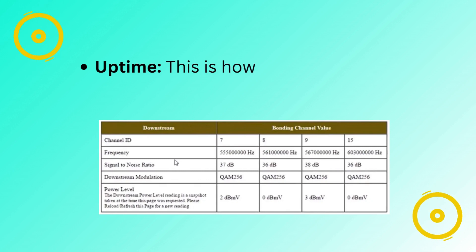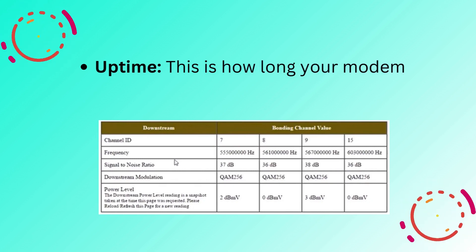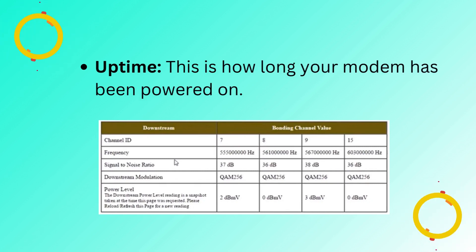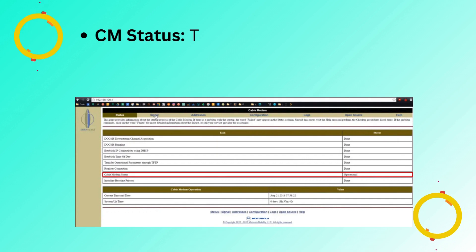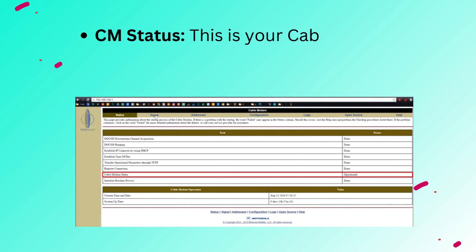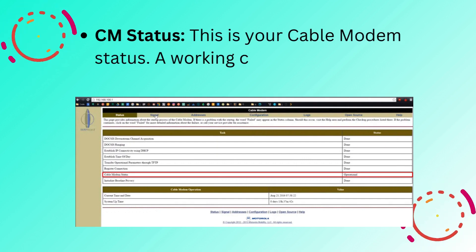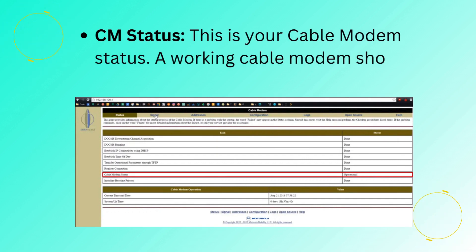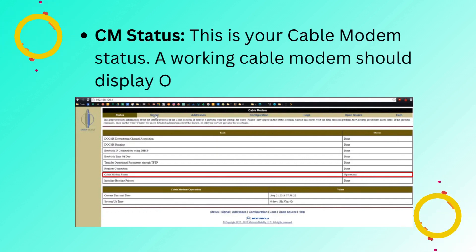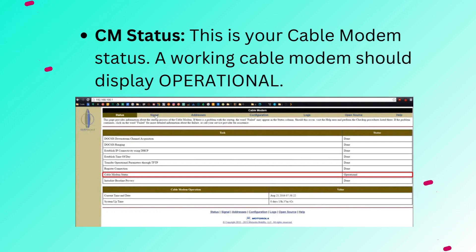Uptime: this is how long your modem has been powered on. CM status: this is your cable modem status. A working cable modem should display operational.